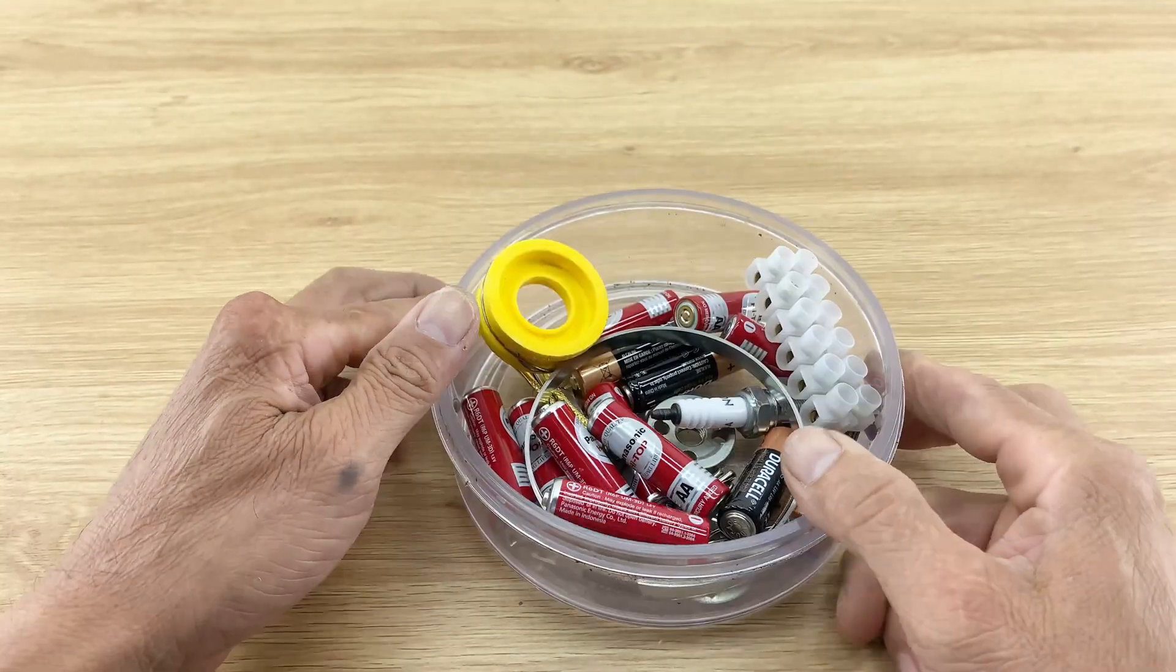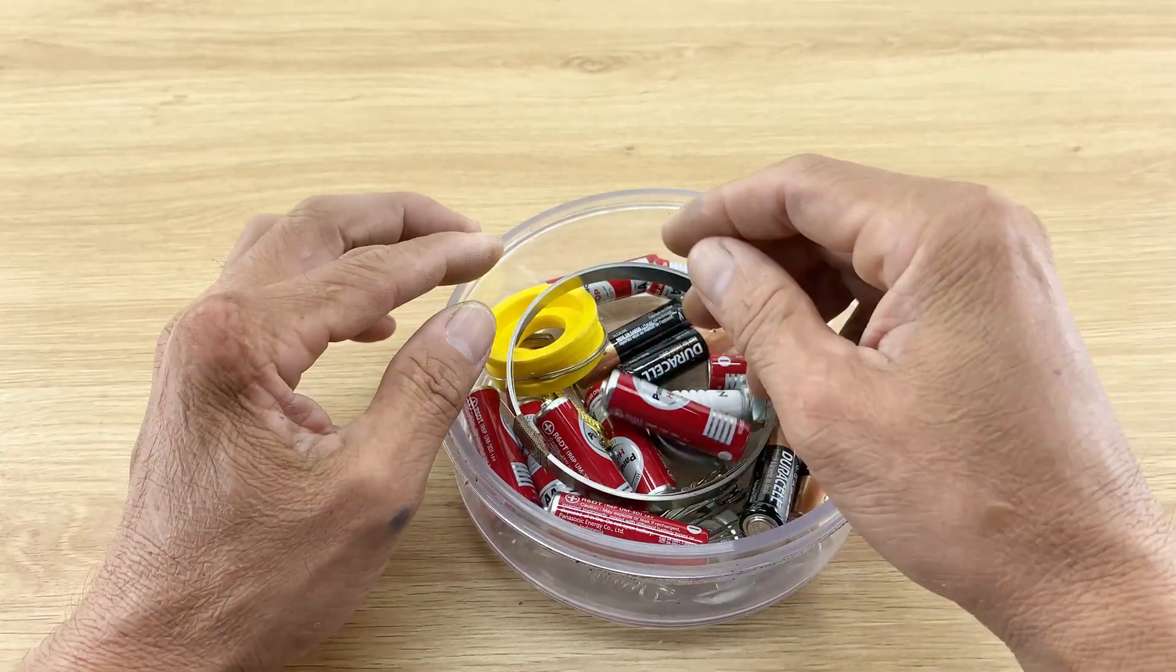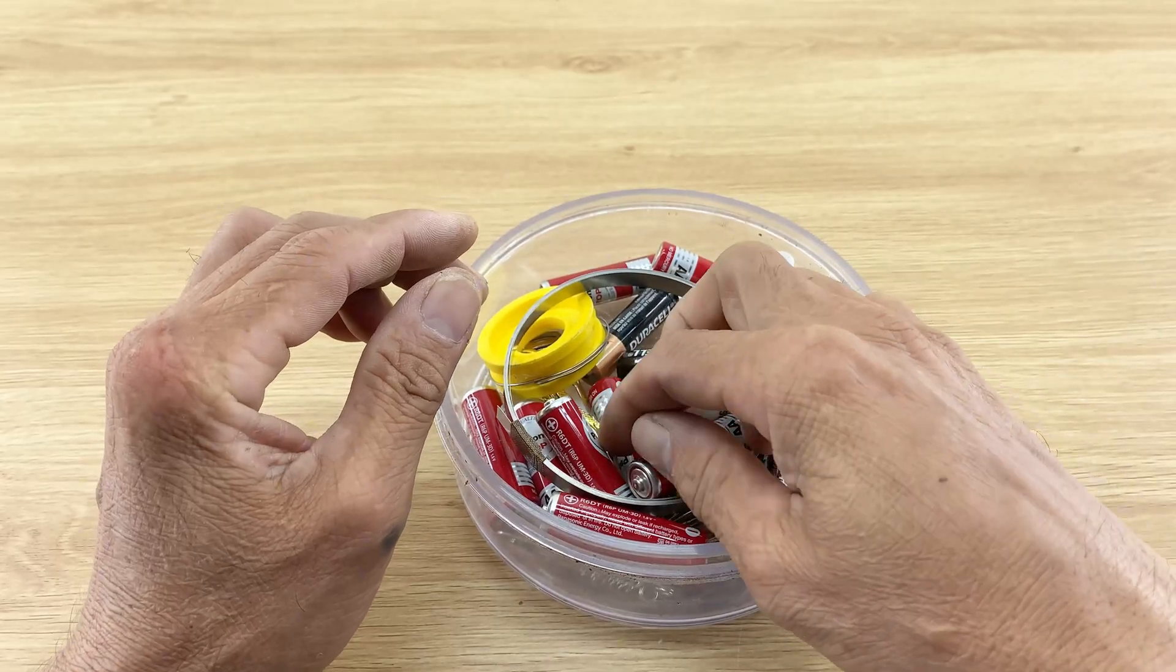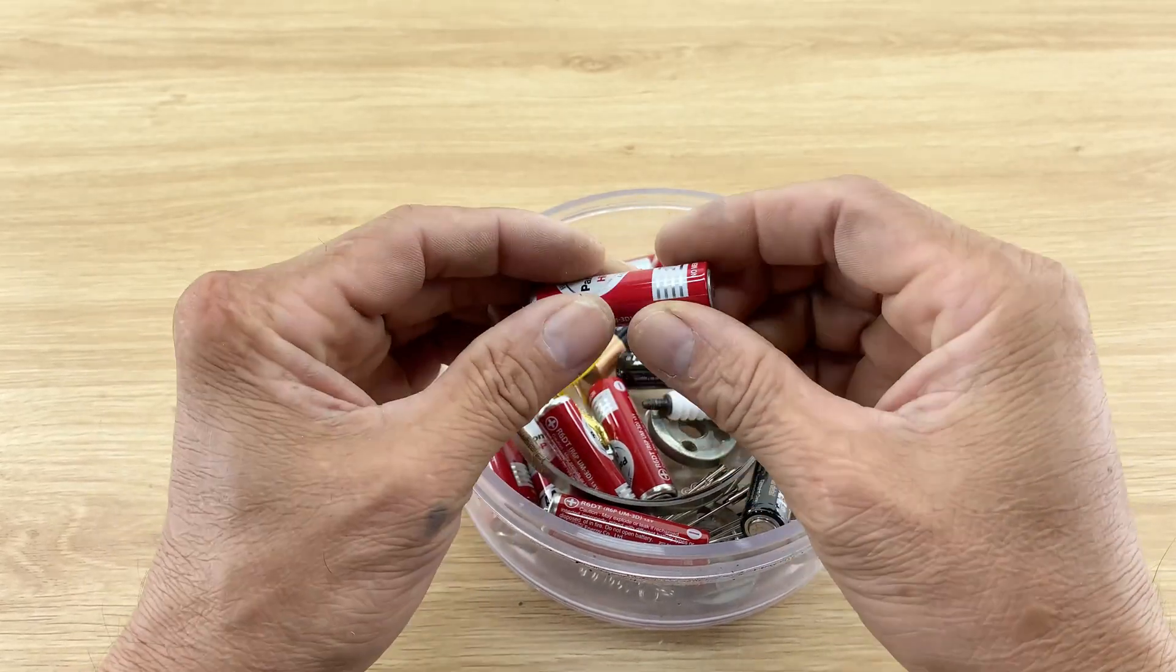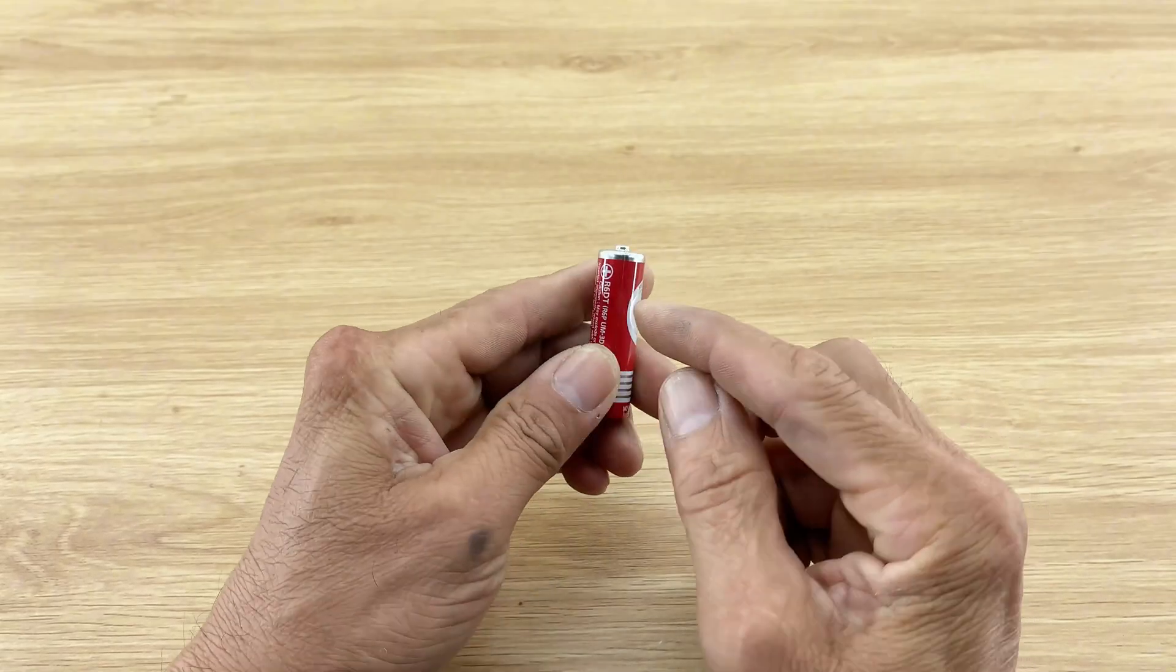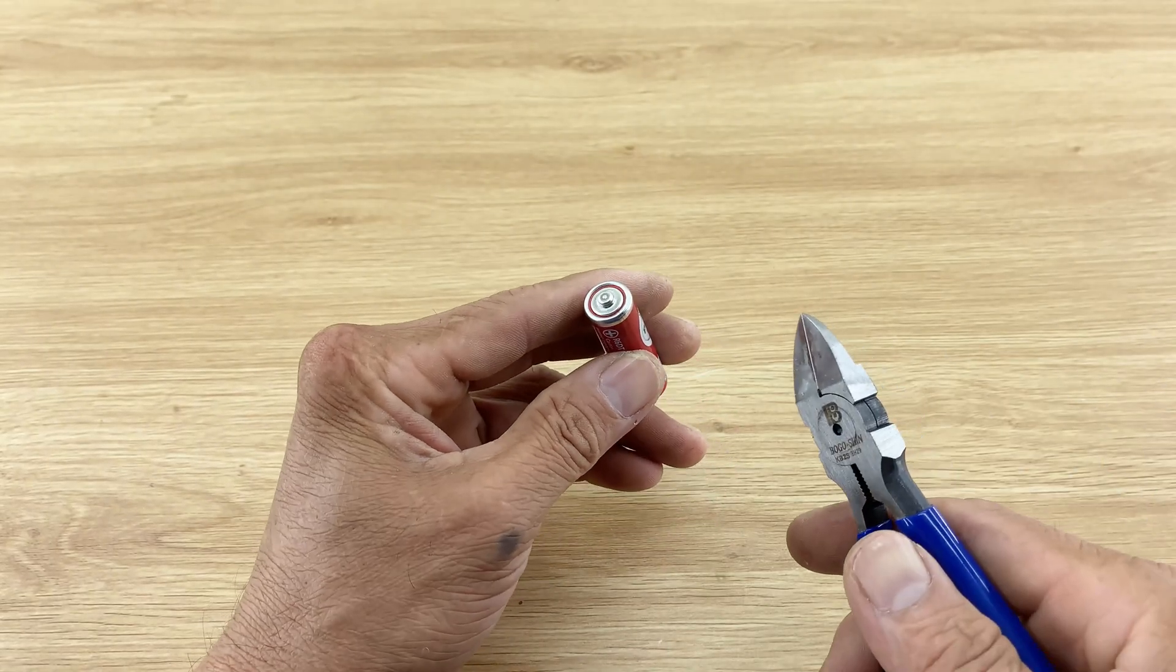Now, for the actual heating element. I'm taking a used AA battery and carefully removing its outer metal casing using pliers. The goal is to extract the carbon rod from the center.